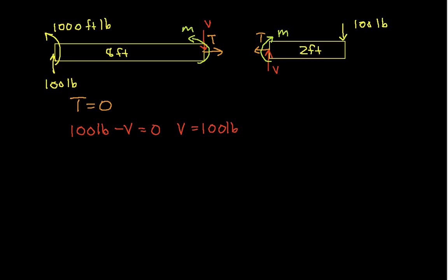And if we sum the moments, we have 1,000 foot-pounds plus M. Let's see, and then we also have V pushing down with a moment arm of 8 feet. So we'll have plus V times 8 feet, and this is equal to 0. And so V is 100, this is 100 pounds.